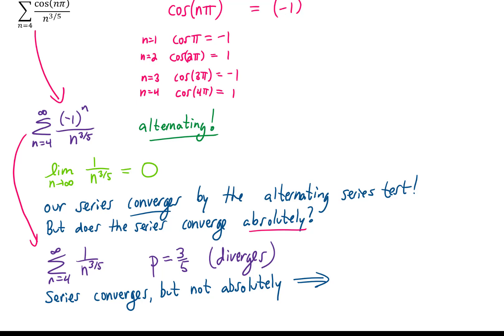What that gives us is that our series converges conditionally. A series converging conditionally is literally a phrase that means a series converges, but it doesn't converge absolutely.